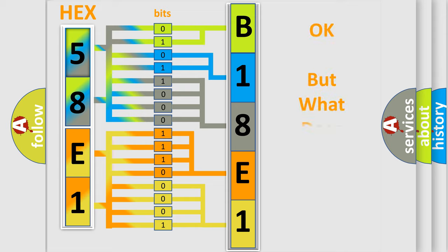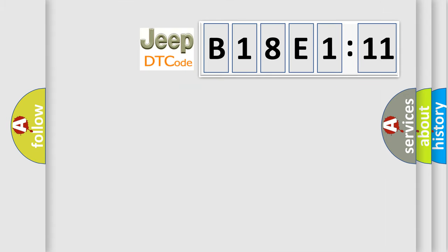The number itself does not make sense to us if we cannot assign information about what it actually expresses. So, what does the diagnostic trouble code B18E1:11 interpret specifically for Jeep car manufacturers?